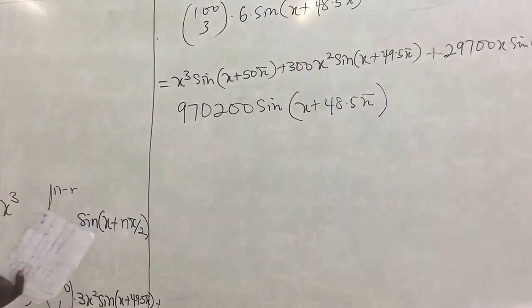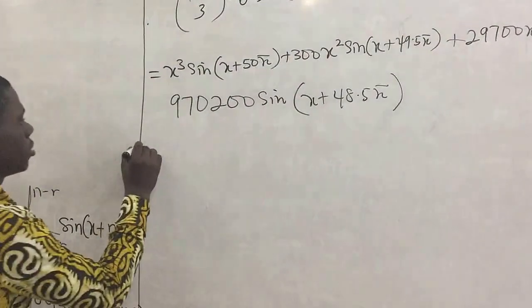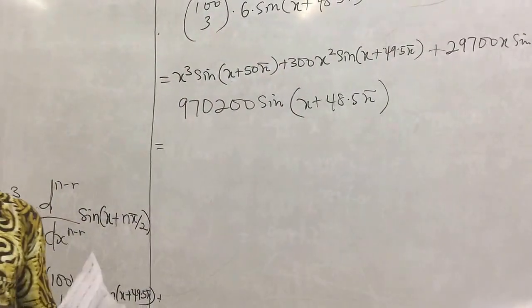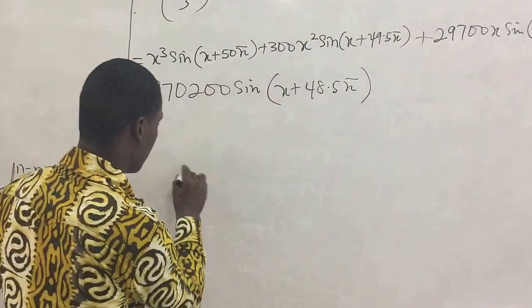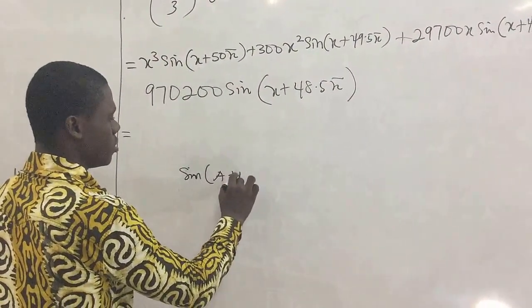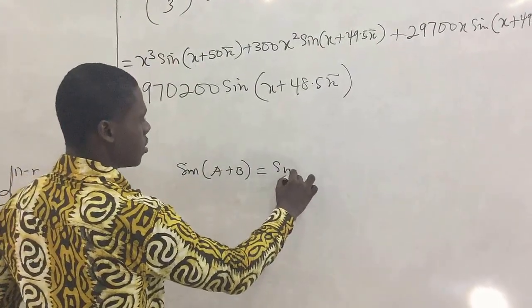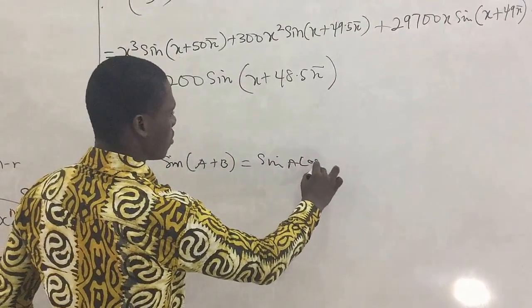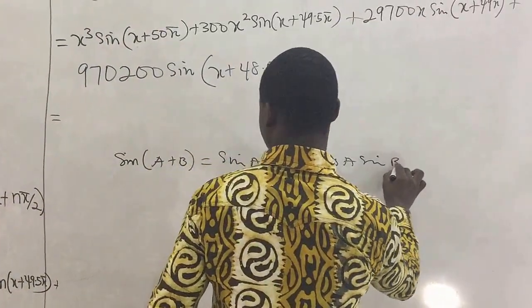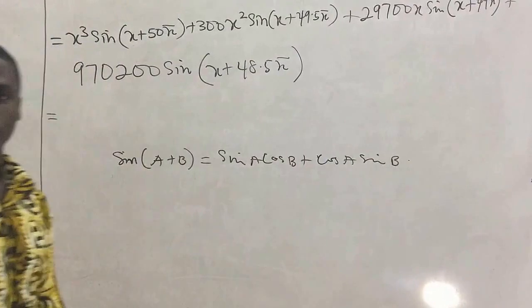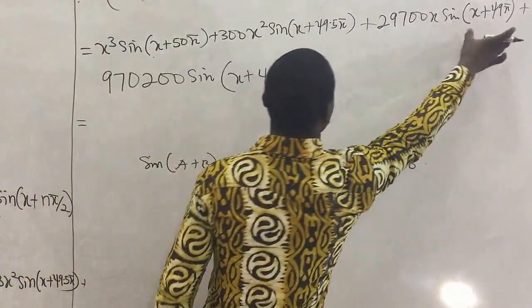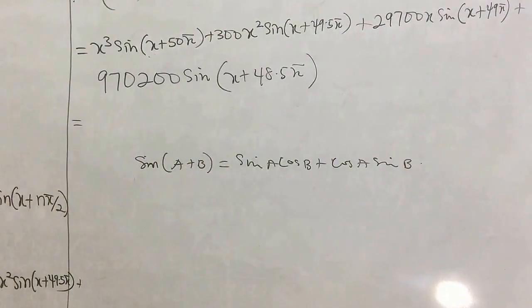Alright, so beyond this, let's see how we simplify this. Here we need to remember a little bit of trigonometry. So if we have sine a plus b, we're told that we'll have sine a cos b plus cos a sine b. Alright, so we're going to use this idea to expand this, this, this, and this. So let's do this and see.